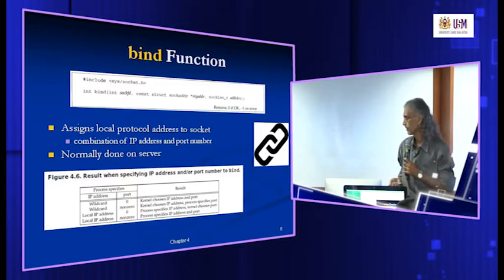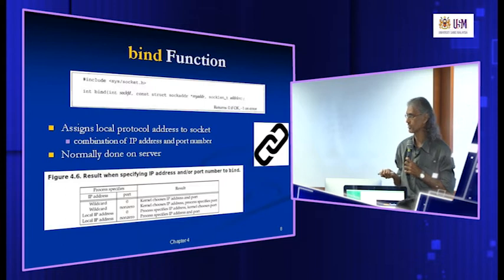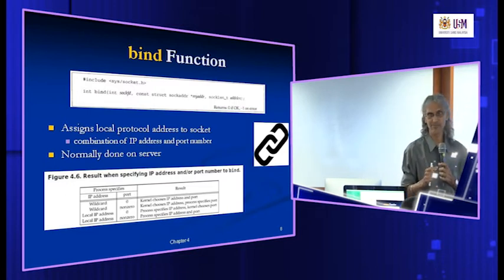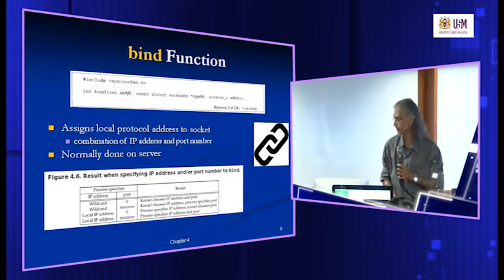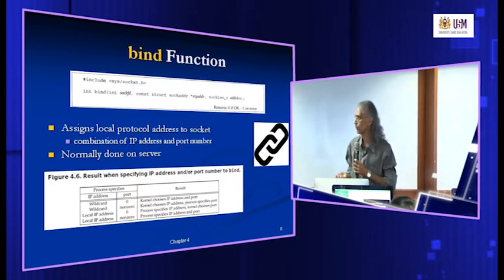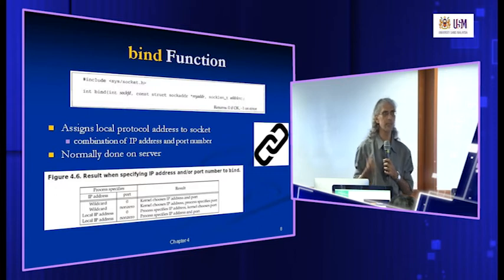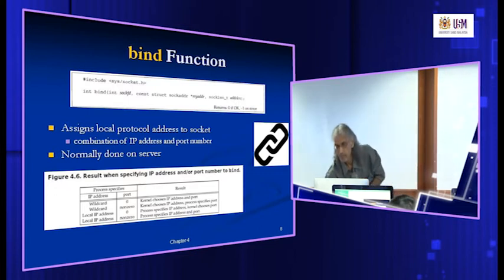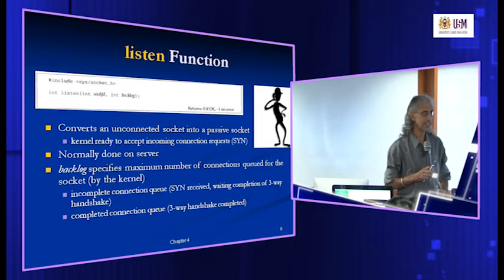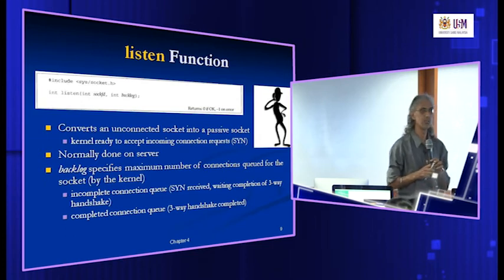We can also hard-code the IP number if we want to run the server on a specific fixed IP address. So there are a few combinations. Typically on the server side, we use the option where the IP address is the wildcard default and the port number is fixed. Once the socket is created and the local protocol address has been bound to it, the server can start the listening process.